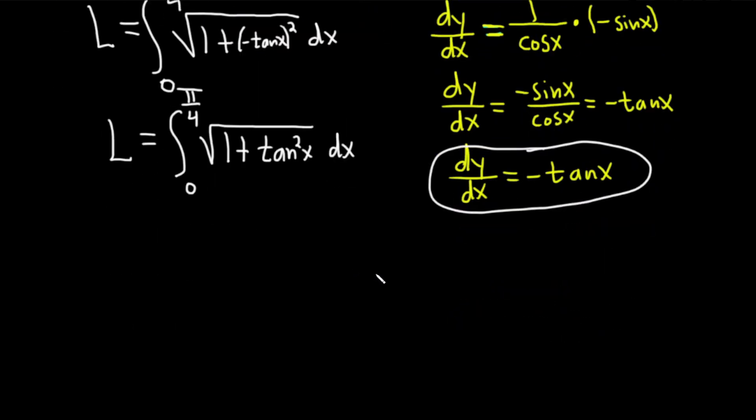Now, 1 plus tan squared is an identity. It's actually equal to secant squared. So L is equal to the definite integral from 0 to pi over 4 of the square root of secant squared x dx. Something really delicate happens next that can easily be overlooked. When you take the square root of secant squared, technically, you get the absolute value of secant x. However, secant x is positive between 0 and pi over 4. So you can drop the absolute value.